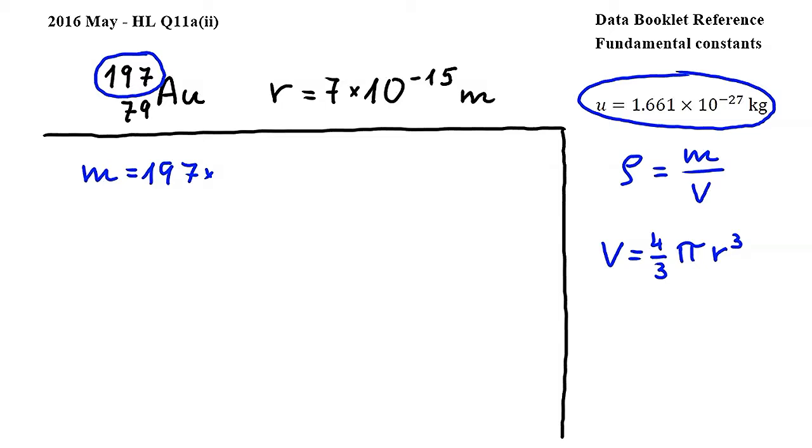This can be found in the fundamental constant section of the data booklet, and which is equal to 1.661 times 10 to the power of negative 27 kilograms. The unified atomic mass is equal to the mass of one nucleon. Carrying out this calculation gives us approximately 3.27 times 10 to the power of negative 25 kilograms for the mass of the gold nucleus.